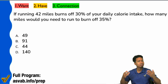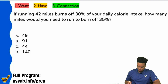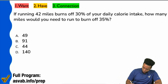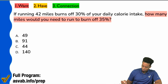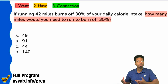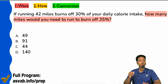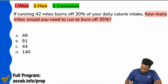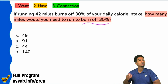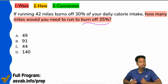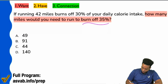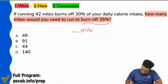First thing always: what is it that we want? It always starts off with who, what, when, where, how many, which of the following. How many miles would you need to run — we need the number of miles that's associated with burning 35% of your daily calorie intake. So I'll write what I want like this: blank miles equals 35%.